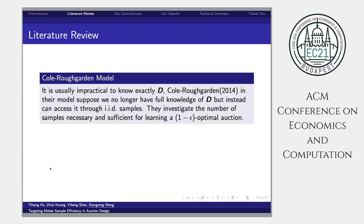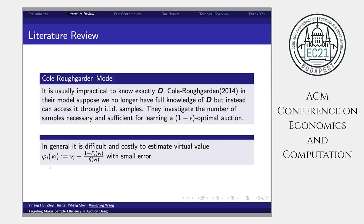Cole and Roughgarden in 2014, in their models, suppose we no longer have full knowledge of D. But instead, we can access distribution D through IID samples. They investigate the number of samples necessary and sufficient for learning a 1 minus epsilon-optimal auction. In general, it is difficult and costly to estimate virtual value if we do not know exactly the distribution D.